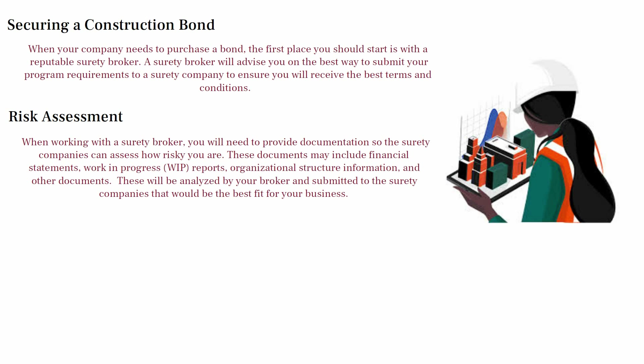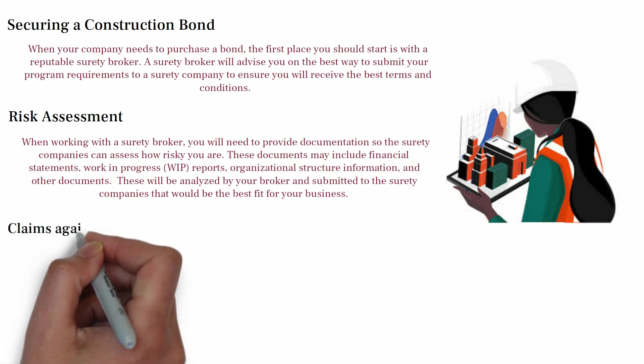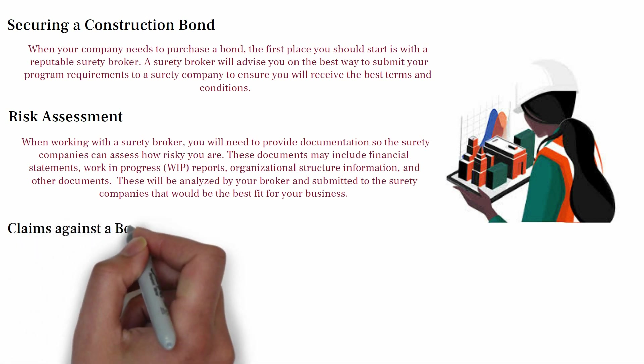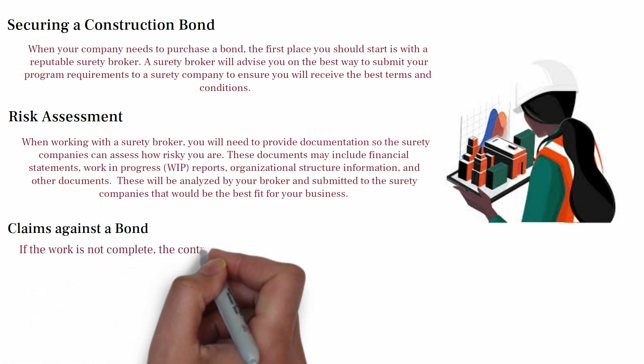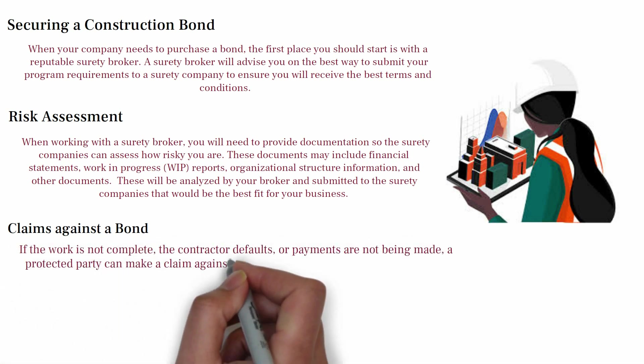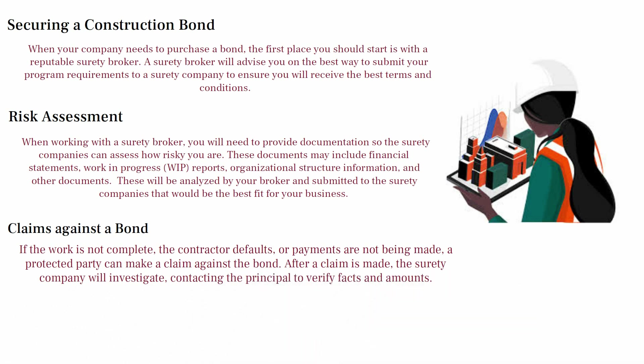Claims against a bond — if the work is not completed, the contractor defaults, or payments are not being made, a protected party can make a claim against the bond. After a claim is made, the surety company will investigate, contacting the principal to verify facts and amounts. After a claim has been satisfied, the surety will then look to the principal for payment of any losses or expenses as documented in the bond agreement.